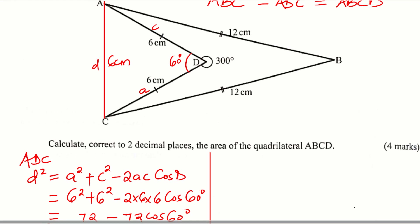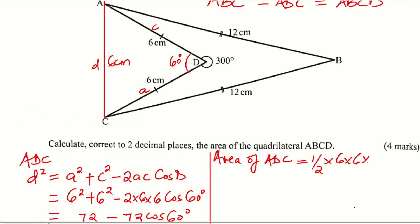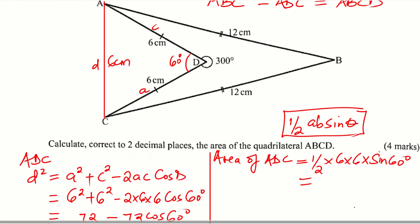Now having that, we can get the area of that triangle. Area of ADC — you can use Heron's formula, or you can also use the half AB sin theta formula. So I'll use: half times 6 times 6 times sine of 60 degrees. That is the formula — half AB sin theta — that I'm using to get the area. Working this out using a calculator gives 15.59 centimeters squared.